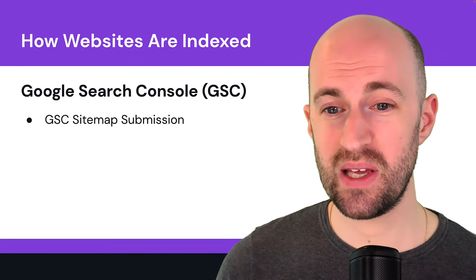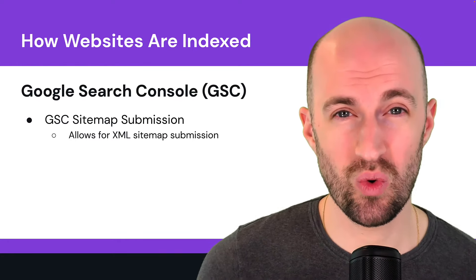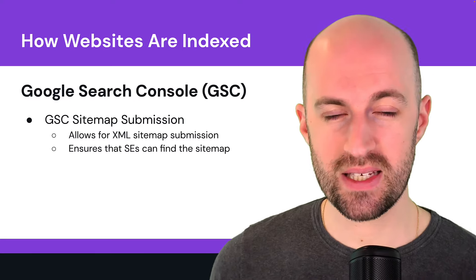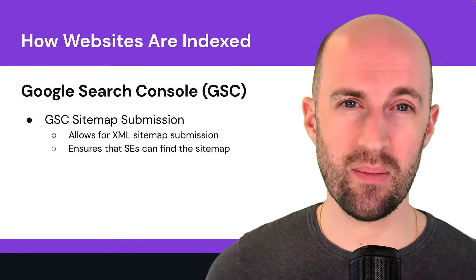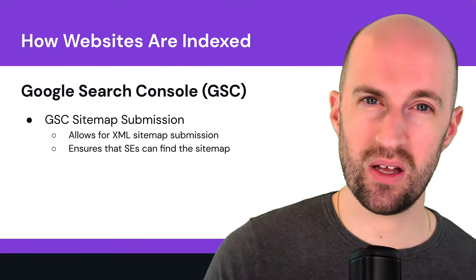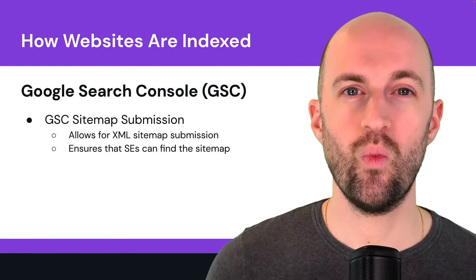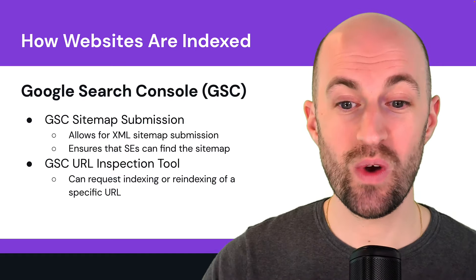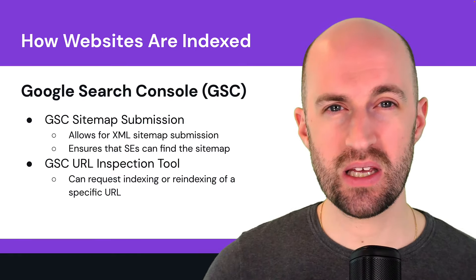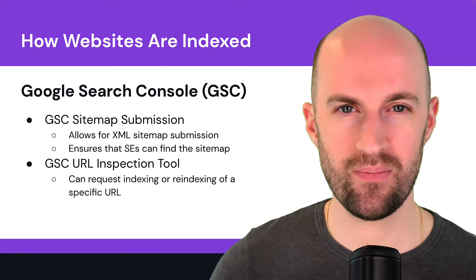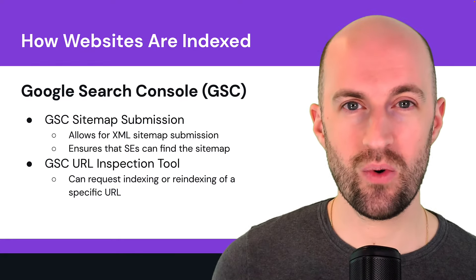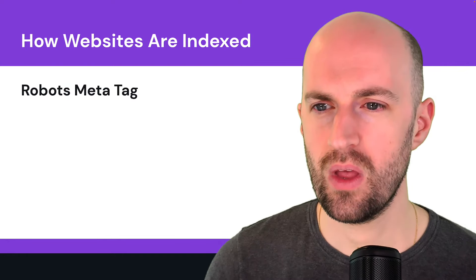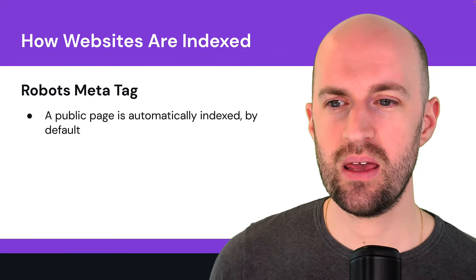Google Search Console is a great tool that allows you to submit your sitemap — basically telling Google here are all the pages on my site, start indexing them. It also helps Google find the sitemap especially if you're using an unconventional CMS or custom-coded website. There's also the URL Inspection Tool for requesting indexing or re-indexing of a specific URL. You submit the URL and Google will crawl it and re-index it — useful when you've updated, deleted, or added a new page.